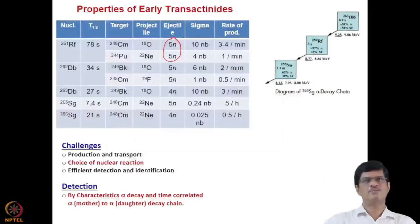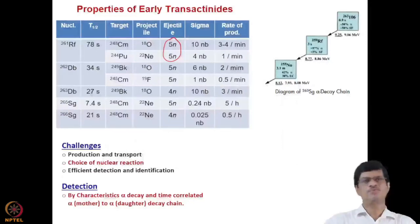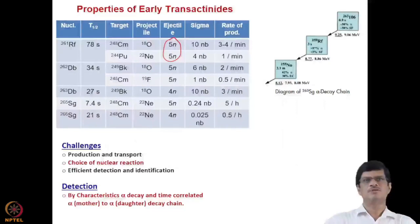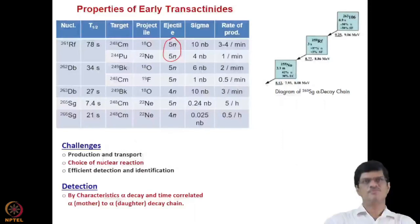261-Rutherfordium is formed either by a 248-Curium target with an oxygen-18 beam, or a 244-Plutonium target with a neon-22 beam; in both cases 5 neutrons are emitted but the cross sections differ significantly. For the 248-Curium reaction the cross section is 10 nanobarn, producing 3 to 4 atoms per minute, while the 244-Plutonium target gives a cross section of around 4 nanobarn and only one atom per minute.